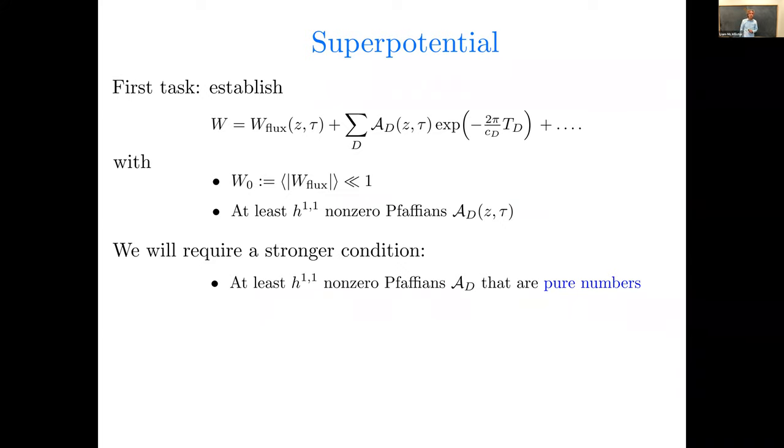Okay, so how do we actually do this? Let's try and establish that the superpotential takes the form of a flux superpotential plus a sum of non-perturbative terms. And let's analyze this formula here. So AD is a Pfaffian prefactor that depends on the complex structure moduli and the axio-dilaton. And the exponential CD is the dual Coxeter number of the gauge group, or if we're talking about Euclidean D3-brane, CD is one. And TD is the complexified volume of some divisor D, an effective divisor. Okay, so this is a perfectly valid general form for the superpotential, but we need to show in particular that, one, the expectation value of the flux superpotential is small, and two, that we can find at least H11 independent non-perturbative terms whose Pfaffians are not zero.